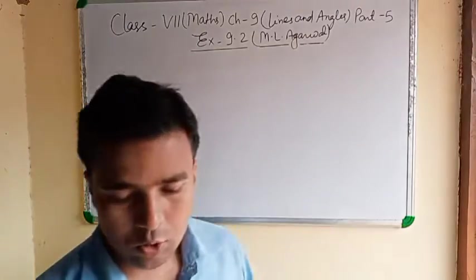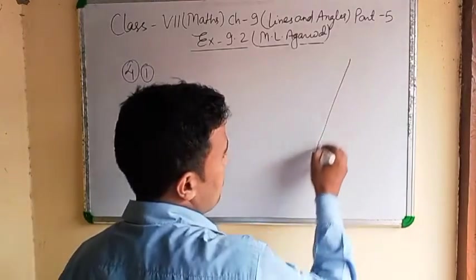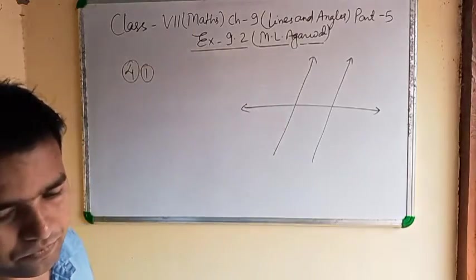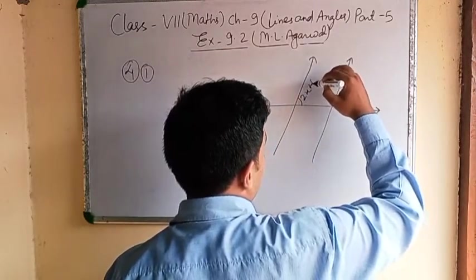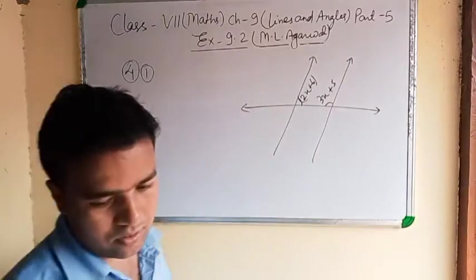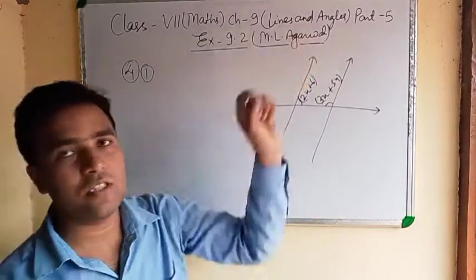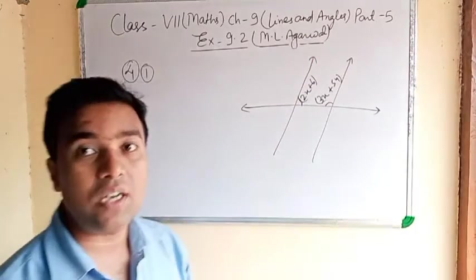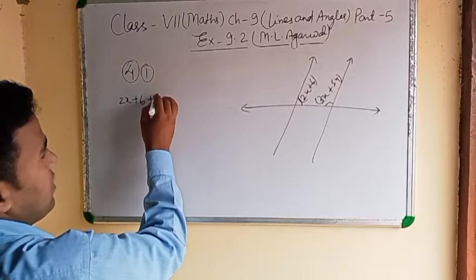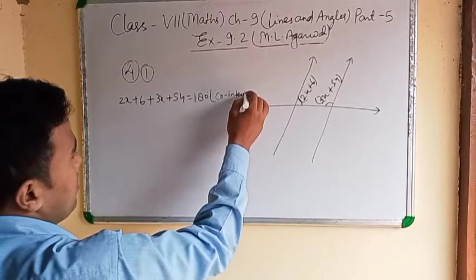The third part of question 3 you can do on your own. Now question number 4 — it is also very easy. In the figure, the angles given are 2x plus 6 degrees and 3x plus 54 degrees. The question asks to find the value of x. We know that these are co-interior angles.